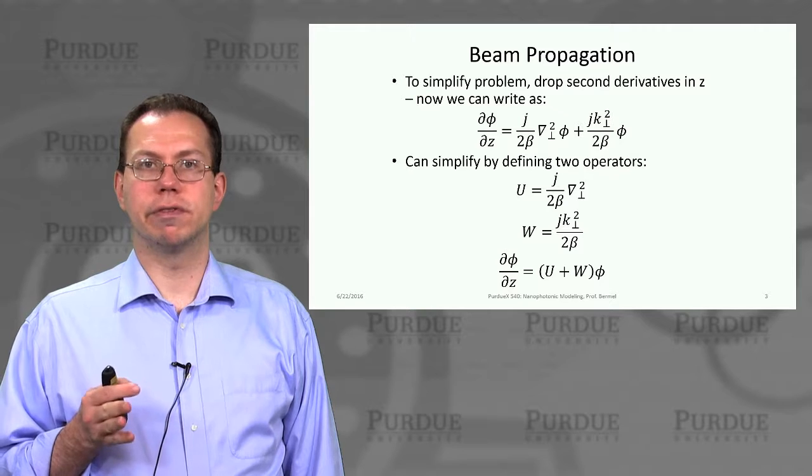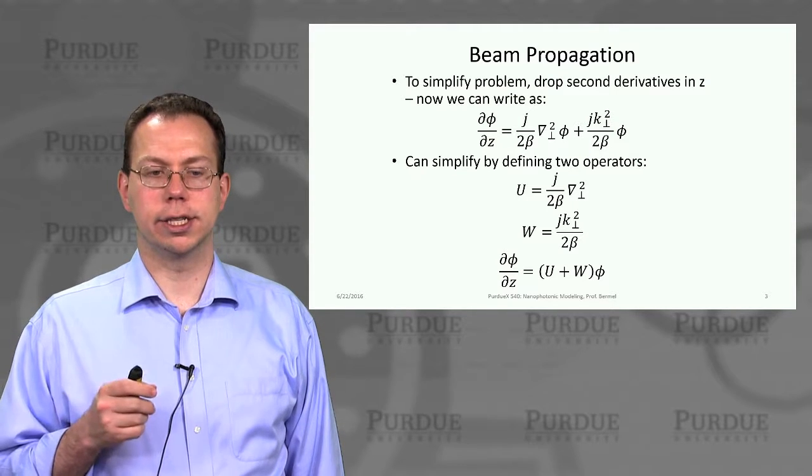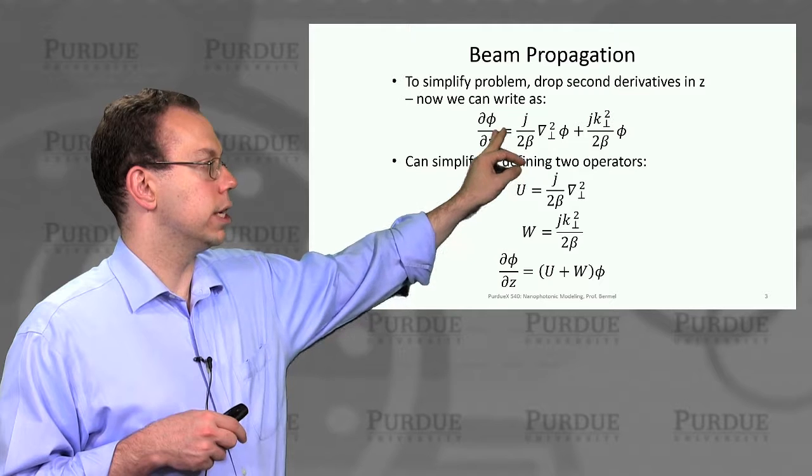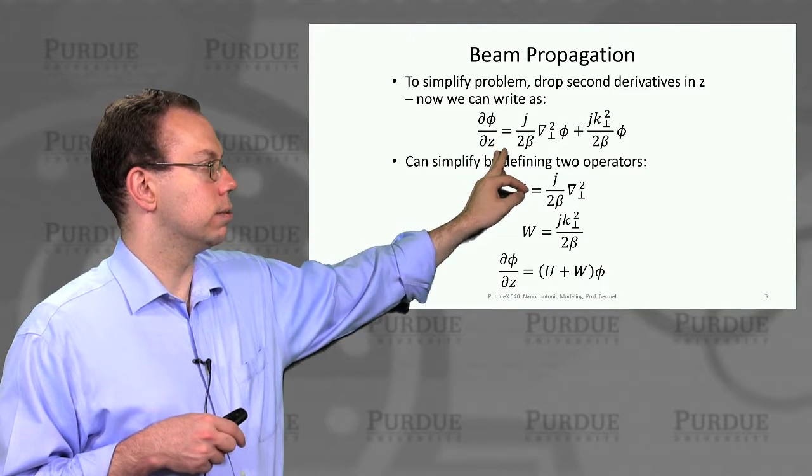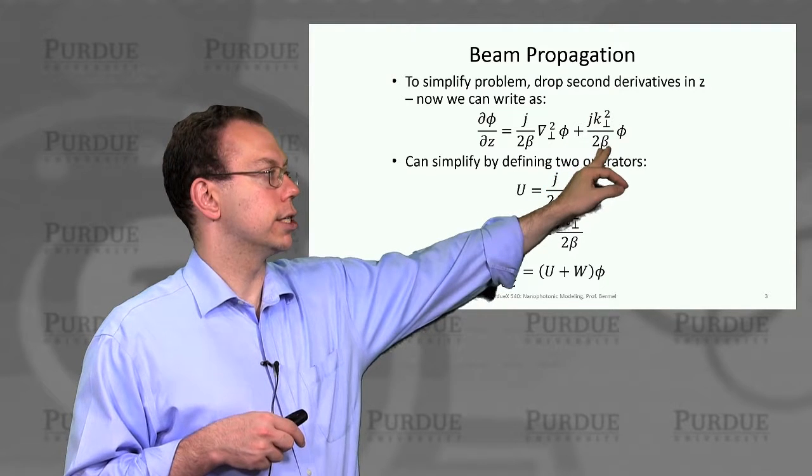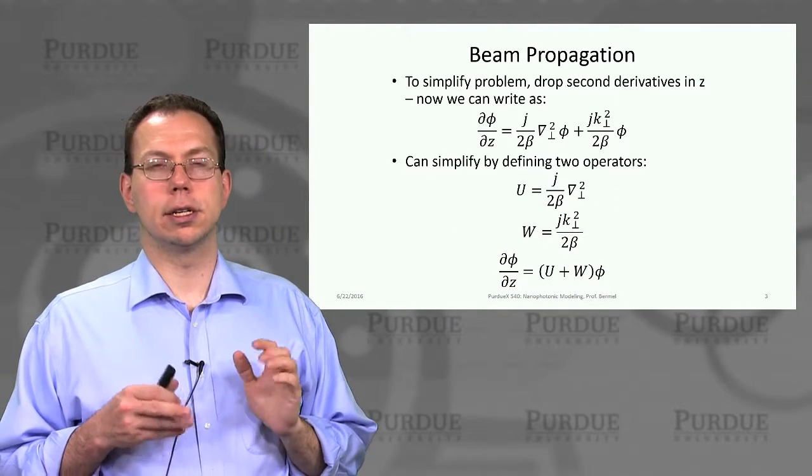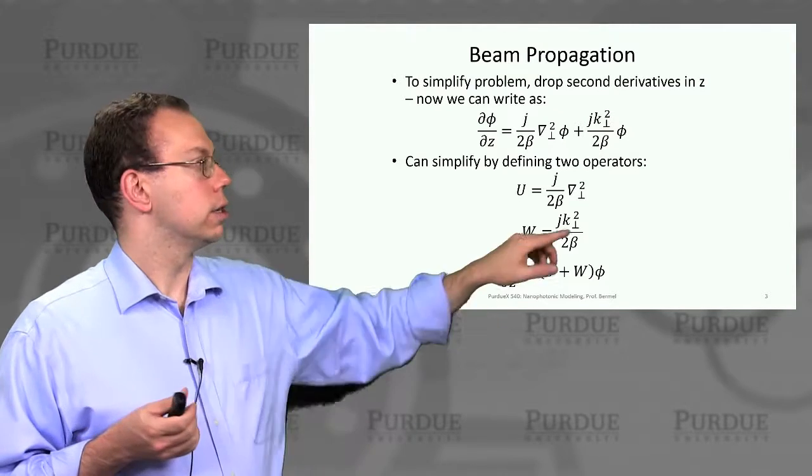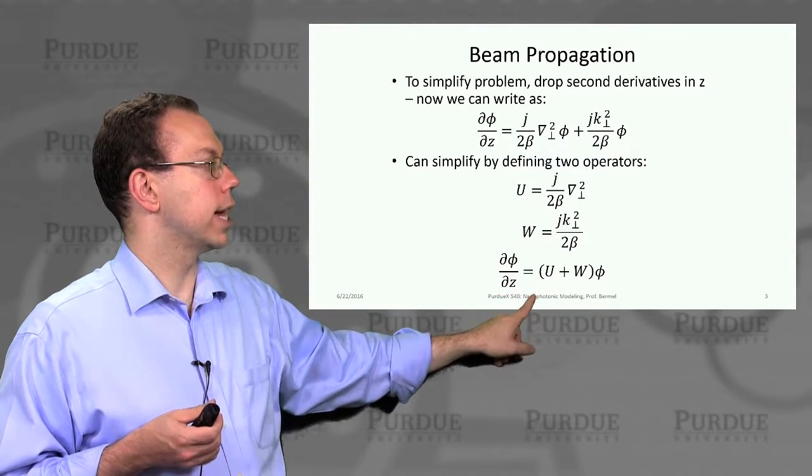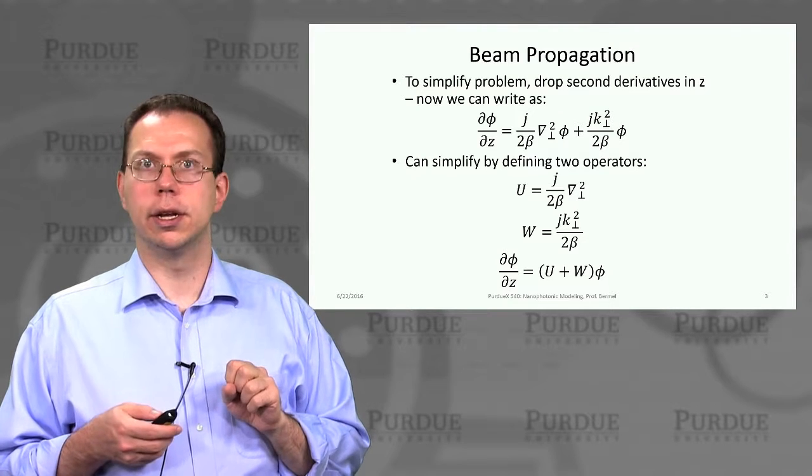To simplify the problem further, we can drop the second derivative in z in some cases, since we assumed we're slowly varying along z. This allows us to write a first-order equation along z. The rate of change of the envelope phi as you propagate in z equals j over 2 beta times the transverse Laplacian of phi, plus j times k perpendicular squared over 2 beta times phi itself. We can write this more simply by defining the first part as U and the second part as W. That gives us d phi dz equals U plus W times phi, a fairly simple-looking first-order differential equation.